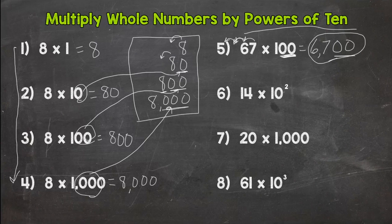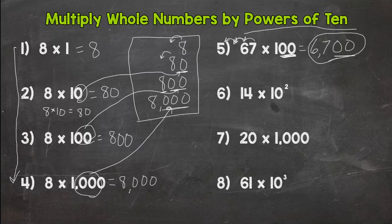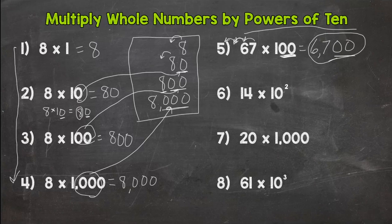Think back to a simpler problem: 8 times 10 is 80. We all know 10 + 10 + 10 eight times equals 80. We used one zero to push that 8 to the correct place value.